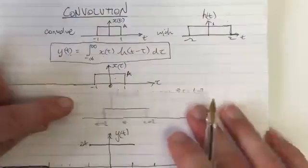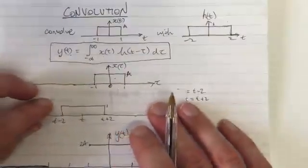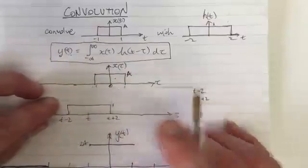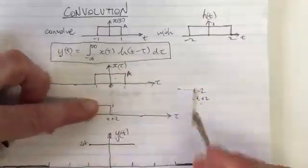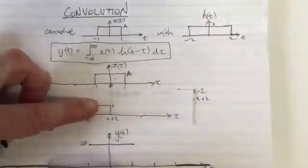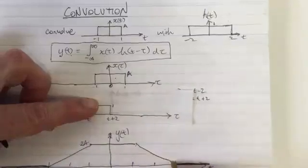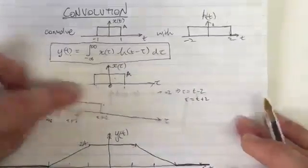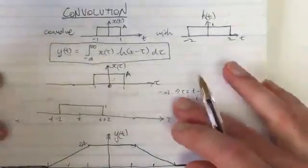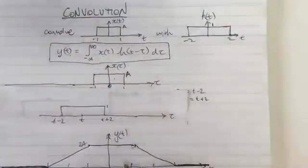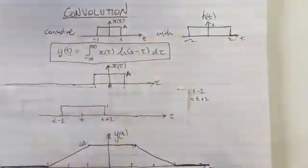In between, the overlap increases and decreases linearly, which means the area increases and decreases linearly. So the output is a straight line between the zero and maximum regions on each side. This is the answer for the convolution of those two square functions.